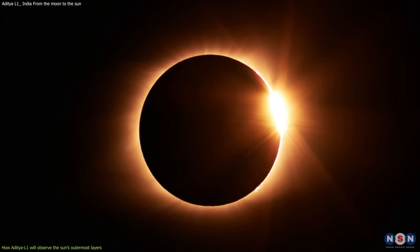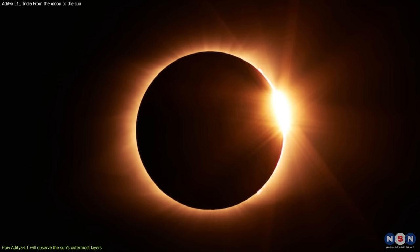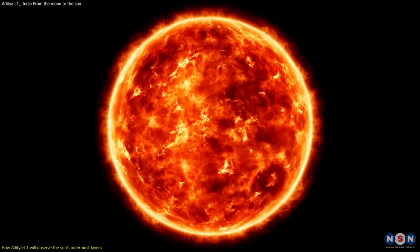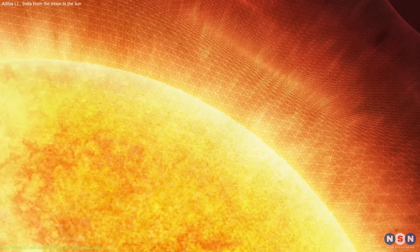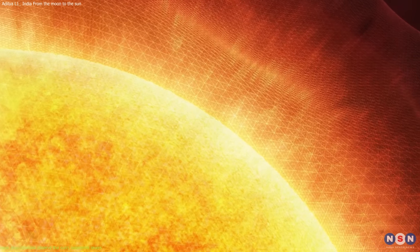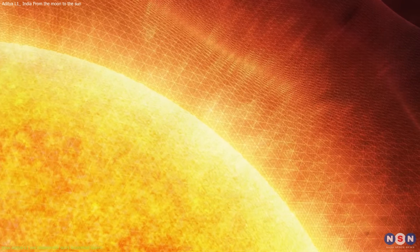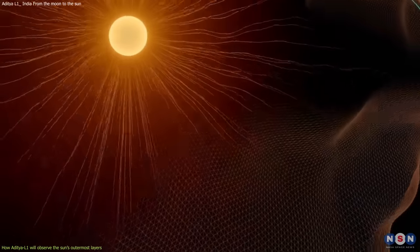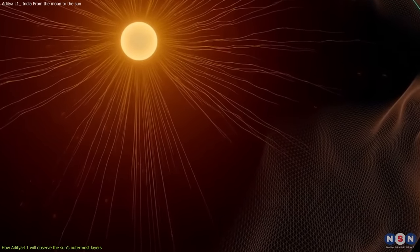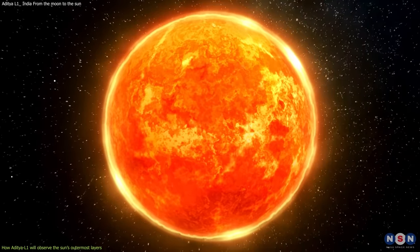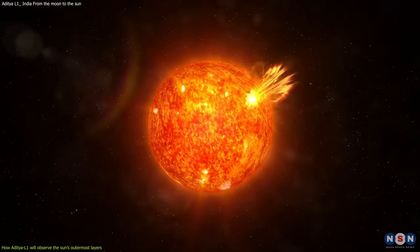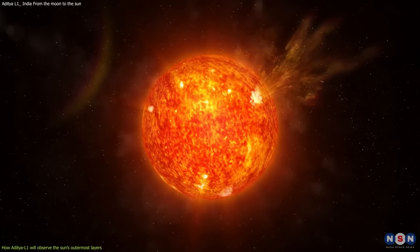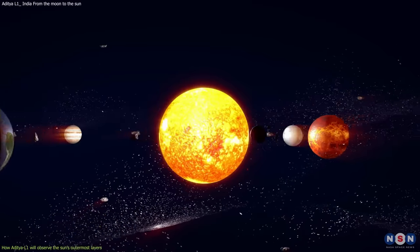The chromosphere is a thin layer of plasma that emits a reddish glow during a solar eclipse. It has a temperature of about 10,000 degrees Celsius. On the other hand, the corona is the outermost layer of the Sun, which extends millions of kilometers into space. The corona has a temperature of more than 1 million degrees Celsius, which is much higher than the surface temperature. It is also where most of the solar wind originates, which is a stream of charged particles that flows from the Sun to the rest of the solar system.